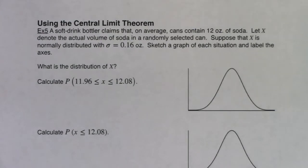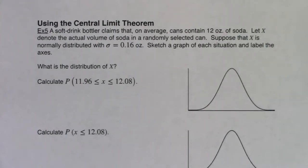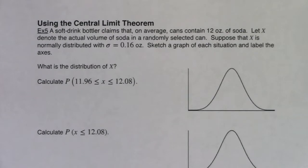Let's start to put the central limit theorem to use. We're going to start with a chapter six problem and then work ourselves up to a chapter seven problem. As I read this, be on the listen for buzzwords and what is the variable in this problem? A soft drink bottler claims that on average cans contain 12 ounces of soda. Let x denote the actual volume of soda in a randomly selected can. Suppose that x is normally distributed with a standard deviation of 0.16 ounces. Sketch a graph of each situation and label the axes.